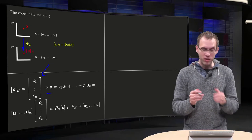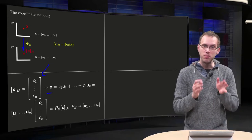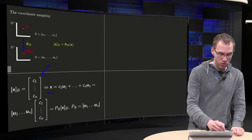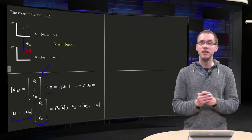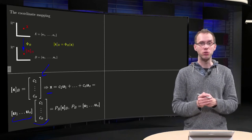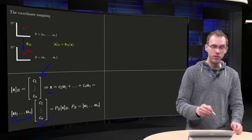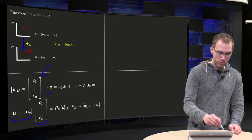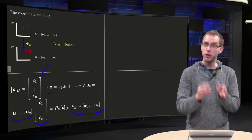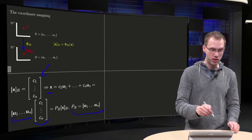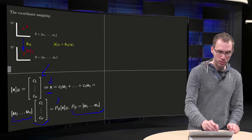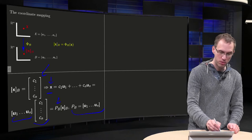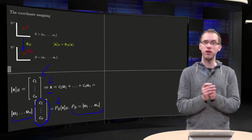And then we see that we can write this x as a matrix times vector, as a matrix consisting of u1 up to un times the vector C1 up to Cn. And now we see what we have to choose as our Pb. We choose as our Pb the matrix with the u1 up to un, because then we see that our original x over here equals this matrix Pb times xB, because this vector with C1 up to Cn was xB.